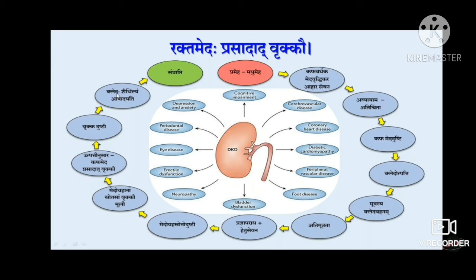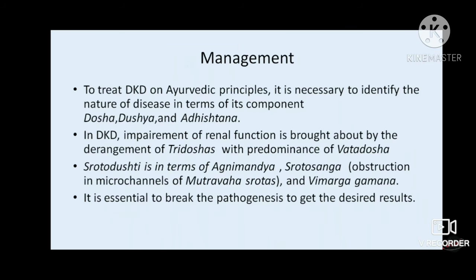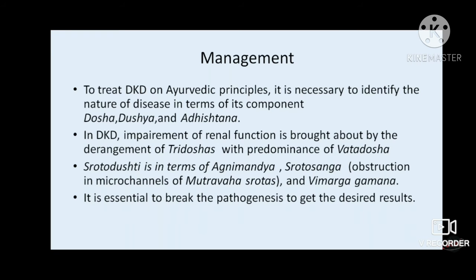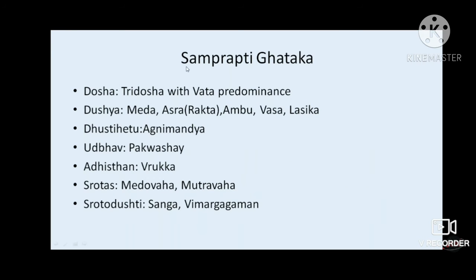As per 'meda sahas sneham adaya sira saithilyam apnuyat,' whenever there is shaitilya it leads to sira saithilya, which can be correlated with glomerular hypertrophy as an initial stage. All of this ultimately leads to end-stage renal disease, or samprapti of vrikka roga according to Ayurvedic terminology.